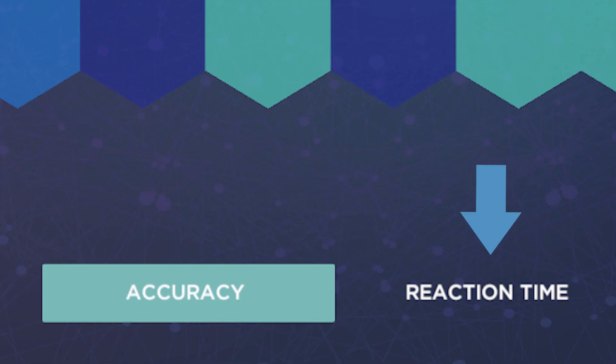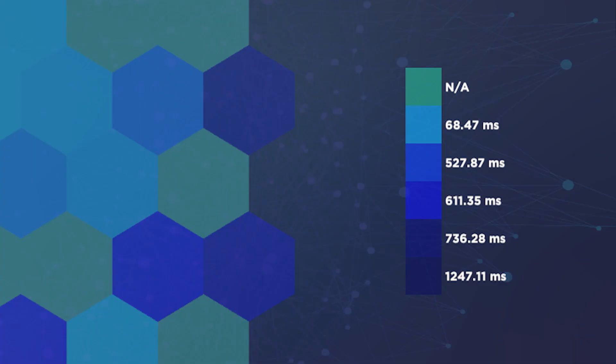The second tab is the reaction time, which works in the same way and breaks down the screen based on your reaction time. Here again, the lighter color is faster reactions and the darker color is slower reactions.